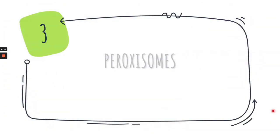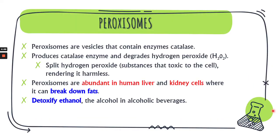The next organelle is peroxisomes, which control the oxidation of cells. Peroxisomes are vesicles that contain the enzyme catalase. This enzyme degrades hydrogen peroxide by splitting the toxic hydrogen peroxide and rendering it harmless. Peroxisomes are abundant in human liver and kidney cells, where they break down fats and toxins, and help in the detoxification of ethanol — the alcohol from alcoholic beverages.